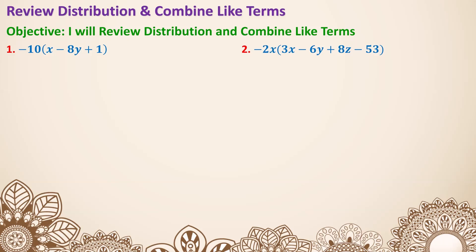Distribution happens when you use a number times a set of parentheses that have several different things in it. Distribute means we're going to give this number outside the parentheses to every single thing inside the parentheses. So negative 10 times x is negative 10x, negative 10 times negative 8y is positive 80y, and negative 10 times 1 is negative 10.